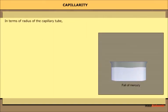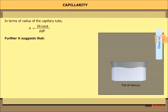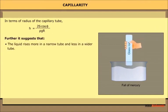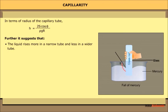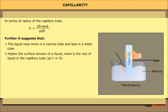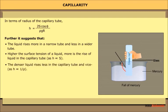In terms of the radius of the capillary tube, h = 2S·cos(theta) / (rho·g·r). This suggests that liquid rises more in a narrow tube and less in a wider tube. Higher surface tension means greater rise of liquid in the capillary tube. A denser liquid rises less in the capillary tube, and vice versa.